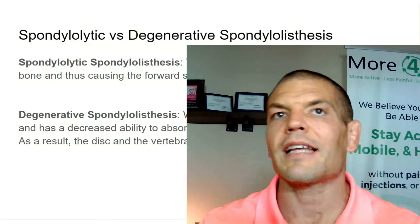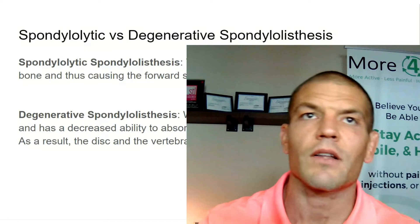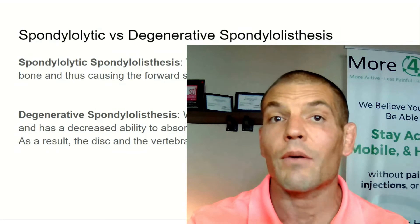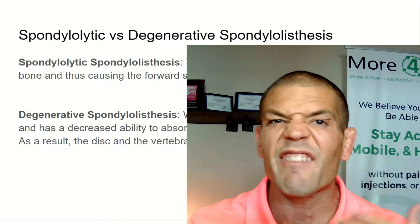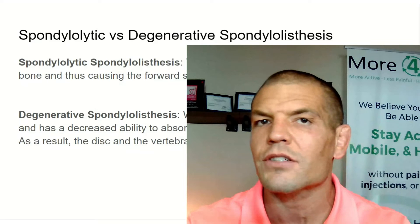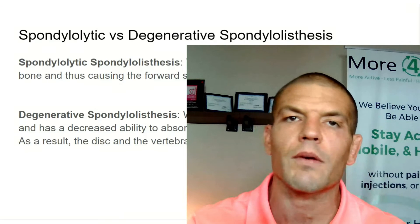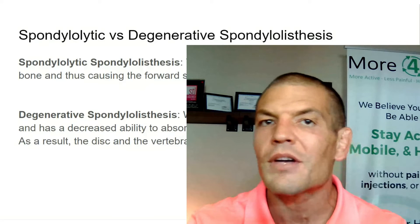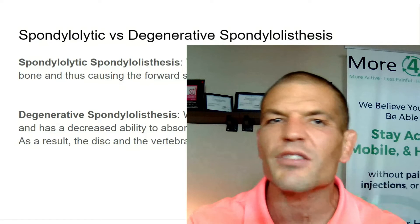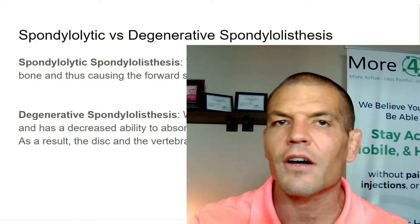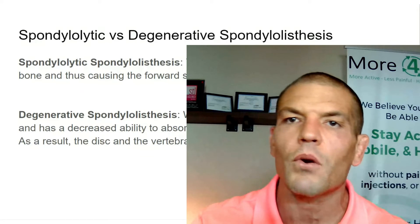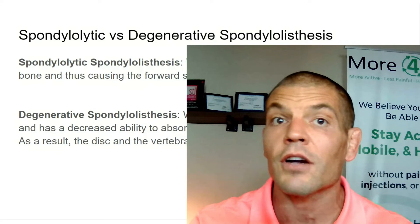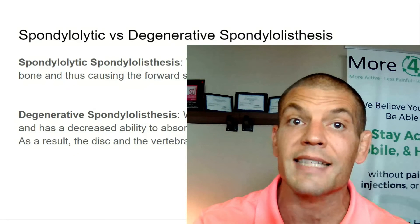Now, spondylytic versus degenerative spondylolisthesis: spondylytic means that you have a spondylolysis — that fracture in the vertebra where things start to slip forward. Degenerative means the discs have dried up over time, so the segments in your spine become a little looser and can cause things to slip around more.